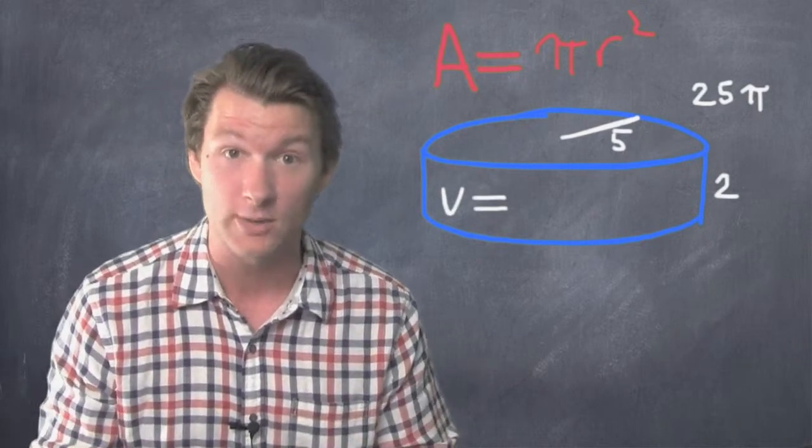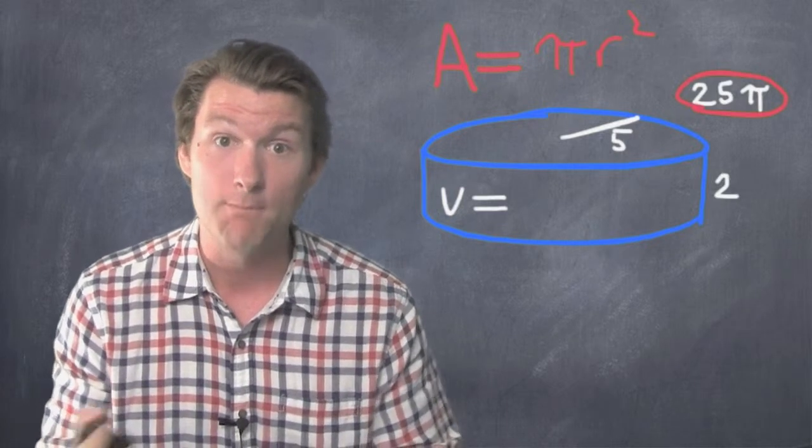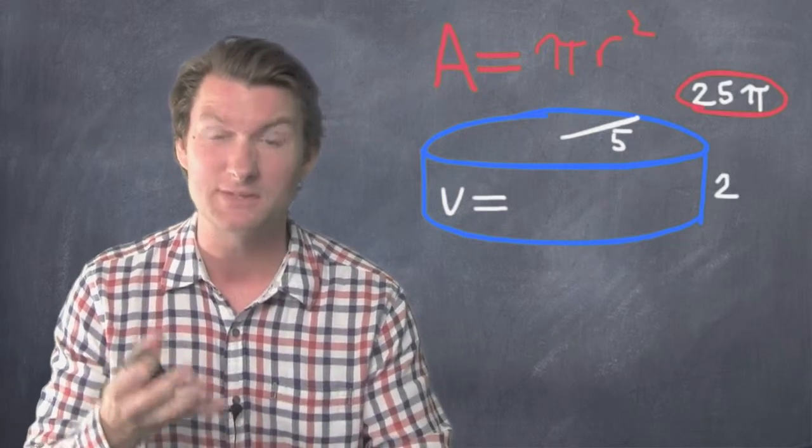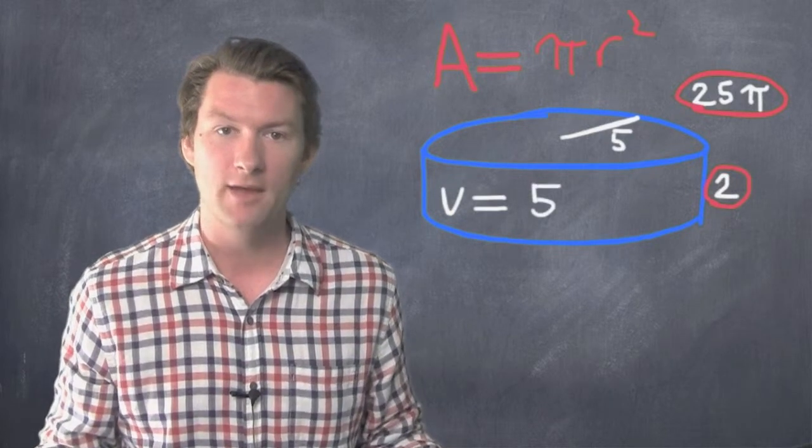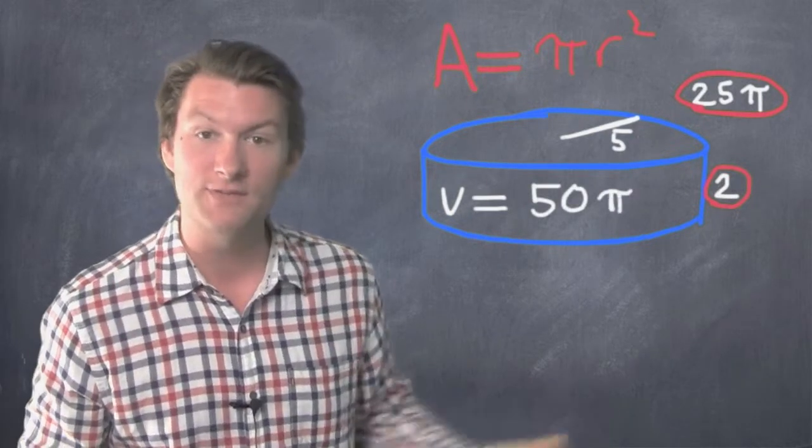Well, you take that area we already found, 25 pi, and multiply it by however tall it is. And if it's two, we do 25 pi times two. 50 pi. Volume of this cylinder is 50 pi.